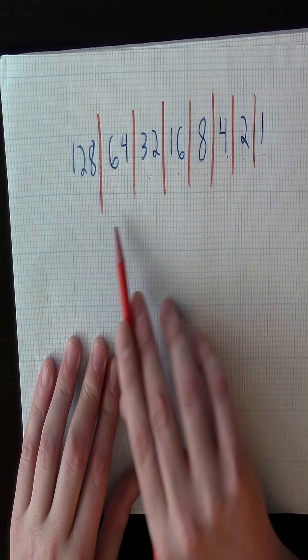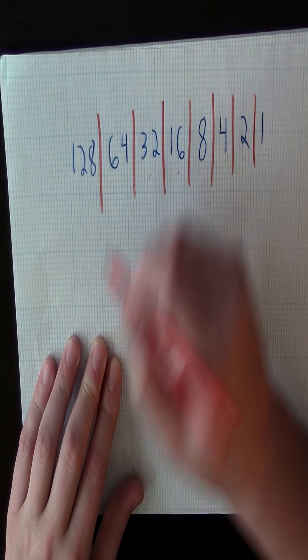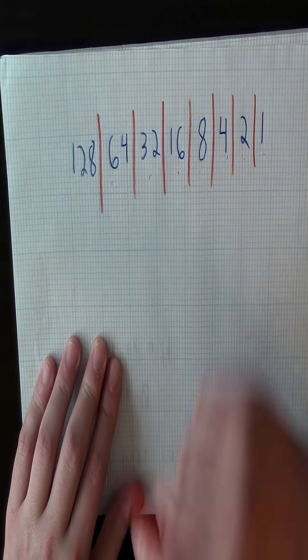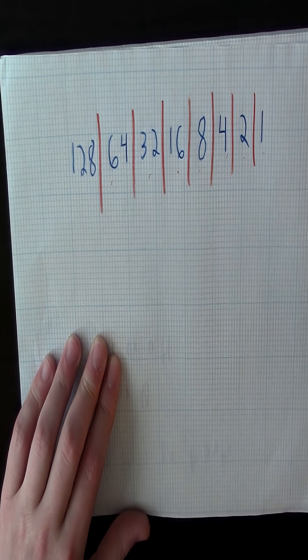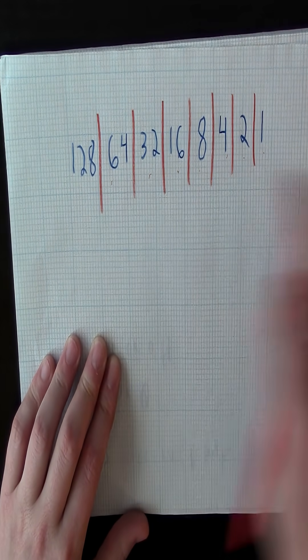Down here we'll have our ones and our zeros. That'll give us one byte of information. So let's just put a binary code down here.